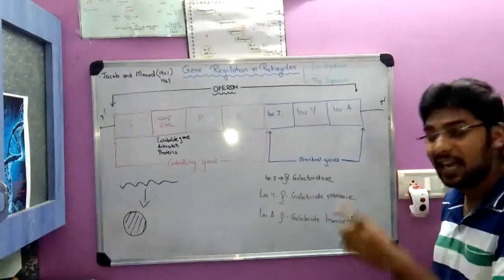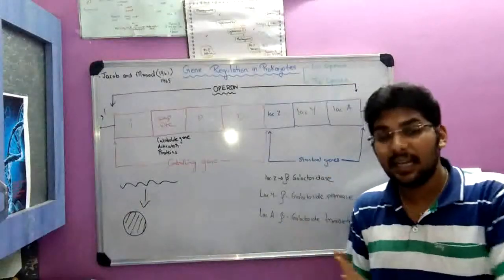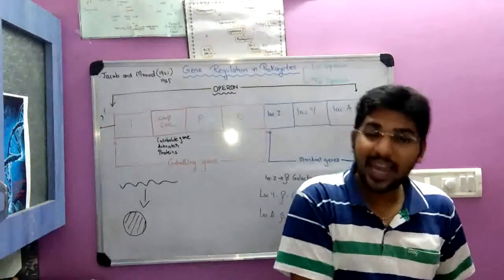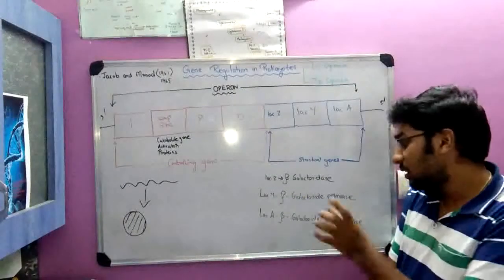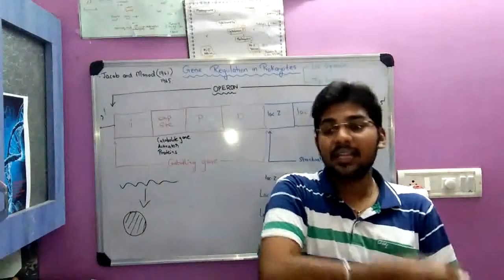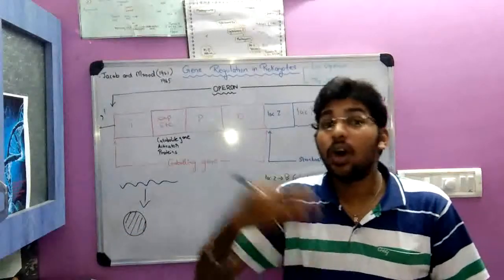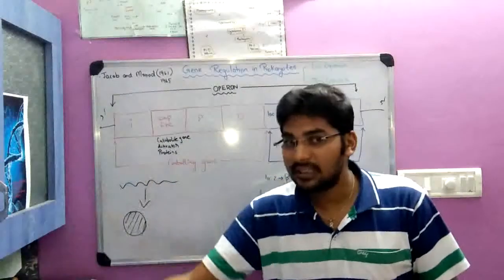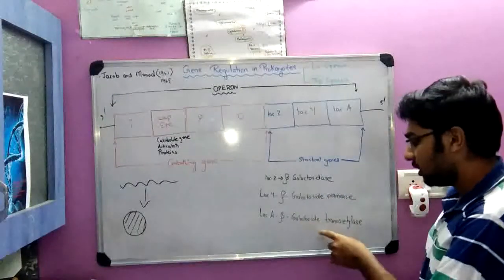The last structural gene, Lac A, produces beta-galactosidase transacetylase. Transacetylase transfers an acetyl group from acetyl coenzyme A to the lactose molecule. When this acetyl group is added to lactose, the lactose cannot leave the cell — it has to stay inside. It blocks the outflow of the lactose molecule. That is the function of galactosidase transacetylase.